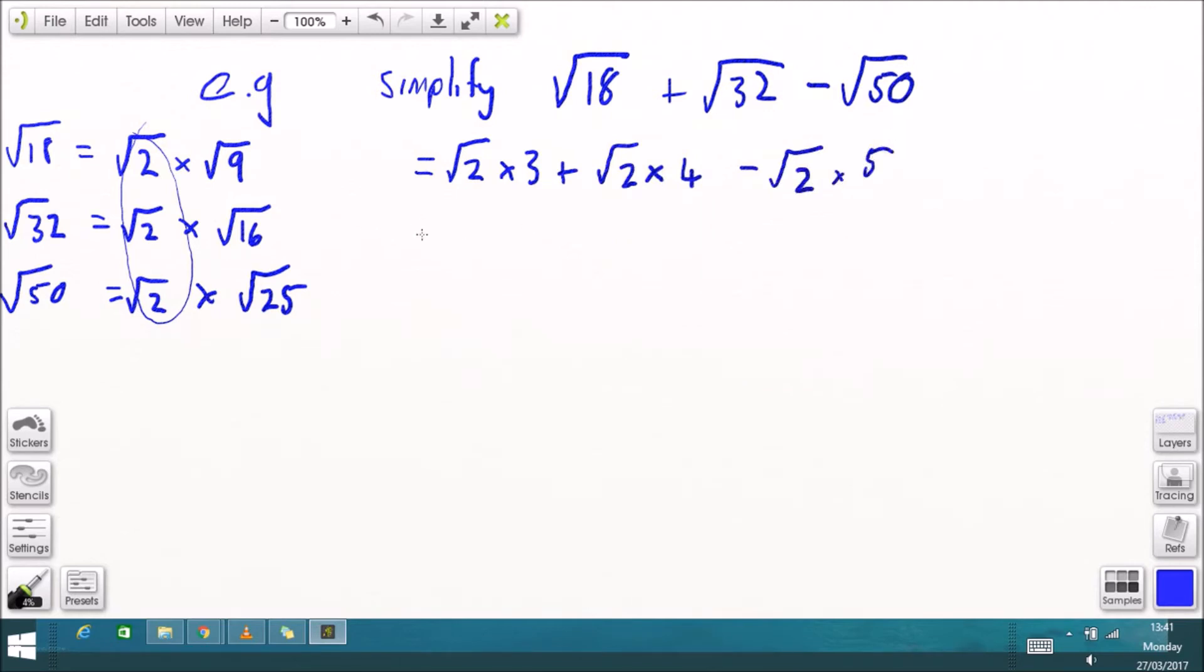so I'll just write this out, root 9 is 3, root 16 is 4 and negative root 25 is 5 and I'll just factor out the common factor which is root 2 and put that outside the bracket here so we've got 3 plus 4 minus 5 is 2 times root 2